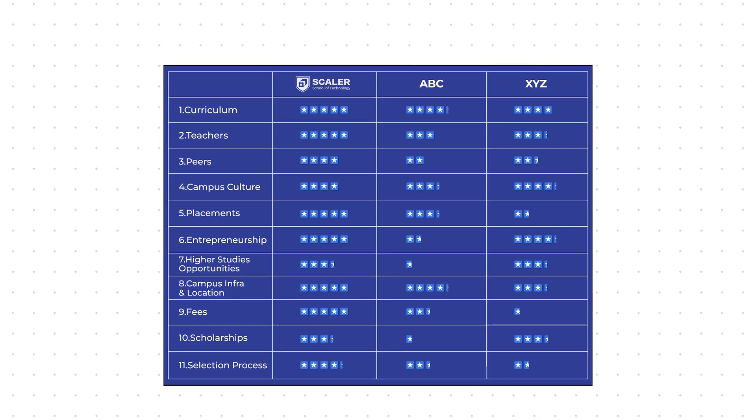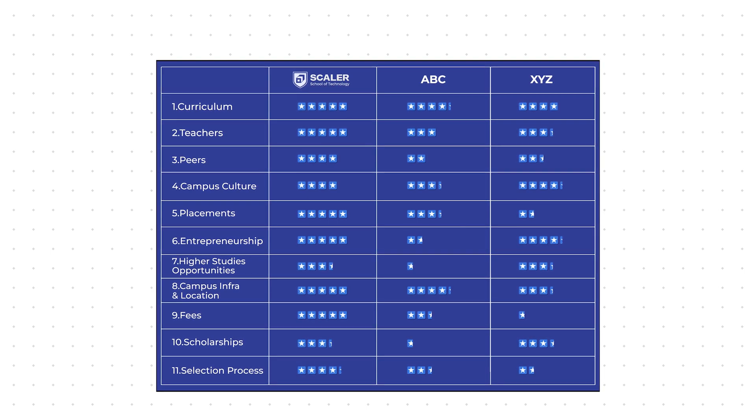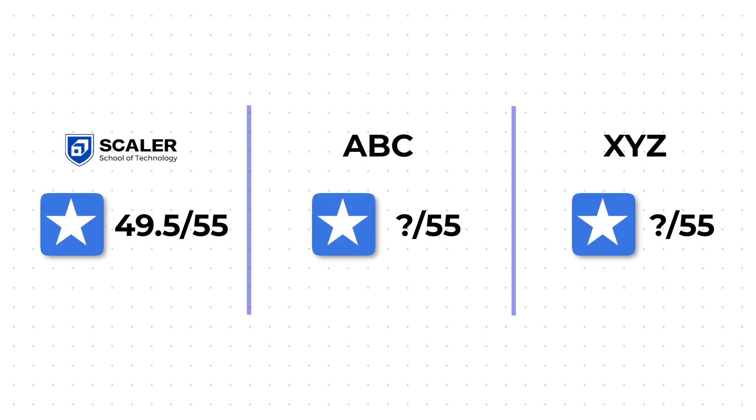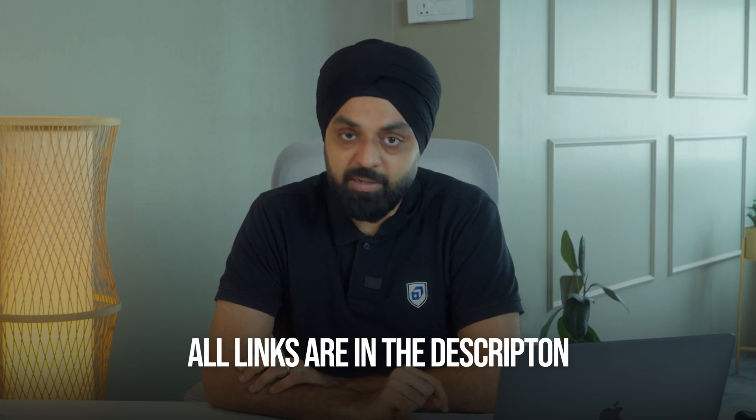Thank you for staying till here. You have all 11 parameters with you — list them down on paper or Excel, rate a particular college across all parameters, total the points, and see which one objectively comes out better. That's how you make your decision. If you need help, SST Programme Advisors will guide you once you have an offer, and our support team is available for any confusion about SST. Thank you so much for watching, and I hope to see many of you on campus soon. Links to all resources mentioned in the video are in the description box below.